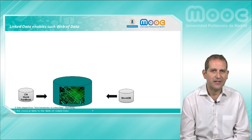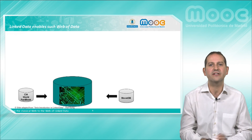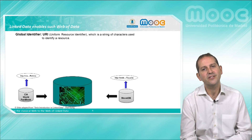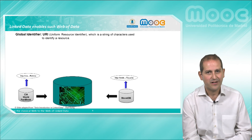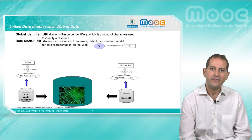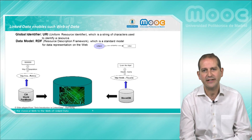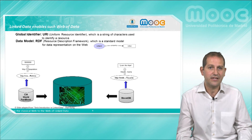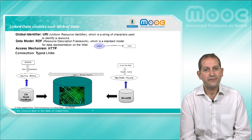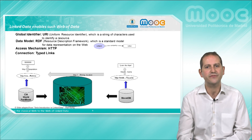In summary, and following our initial example on films and countries, this is the way the four principles are articulated to construct a global web of data. First, we need global identifiers — URIs — to identify resources such as Bolivia as a country and Even the Rain as a film. Then we use the RDF data model to represent data from those databases, such as the fact that Bolivia has 8 million inhabitants or that the film is named Even the Rain. Then we make such data available through the HTTP protocol. And finally, we create named links among data items from both databases, such as the fact that Even the Rain was filmed in Bolivia.